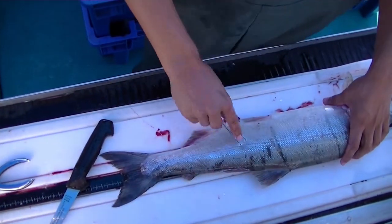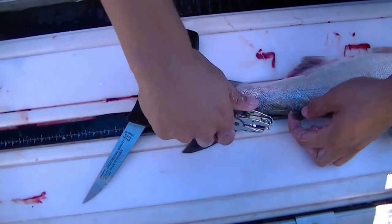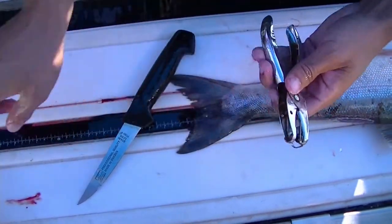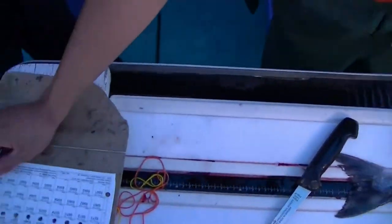A single scale is then collected from a specific location on the salmon, just above the lateral line. Finally, a DNA tissue sample is collected from the adipose fin, then placed on a sheet of Wattman paper, which binds, dries, and preserves the DNA tissue.